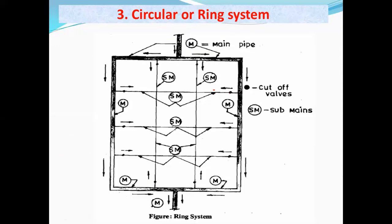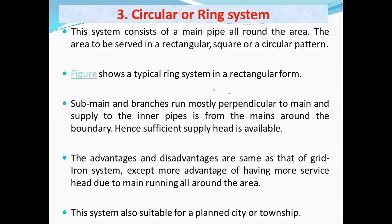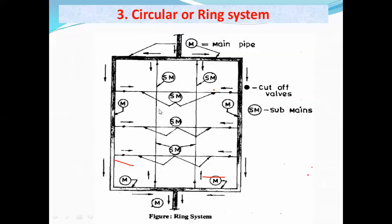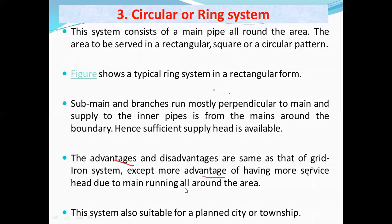The advantages and disadvantages of the circular or ring system are the same as the grid iron system, except there is one additional advantage: there is a higher service head because the main pipe runs all around the periphery of the area rather than just through the center. This gives more head pressure available throughout the system. This system is also suitable for planned cities or townships.